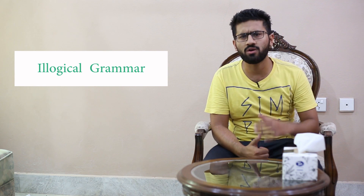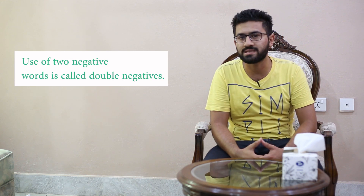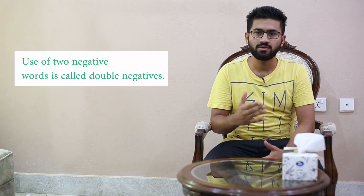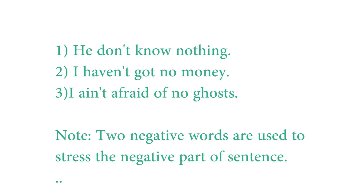The very first point here is illogical grammar, illogical structures. The upper class group members say that in African American Vernacular English there is double negation. What is double negation? Double negation means 'he don't know nothing,' 'I haven't got no money,' or 'I ain't afraid of no ghost' — using a negative word twice.